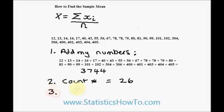Final step, divide step one, 3,744, by step two, which was 26. And 3,744 divided by 26 is 144.